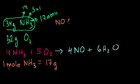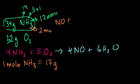If 1 molecule of ammonia is 17 atomic mass units, then 1 mole of ammonia is 17 grams. We're given 34 grams of ammonia, and 34 ÷ 17 = 2. So we're given 2 moles of ammonia.